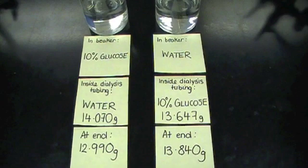However, for the beaker on the right-hand side, the water moved into the dialysis tubing towards the 10% glucose solution, therefore increasing the mass of the tube.